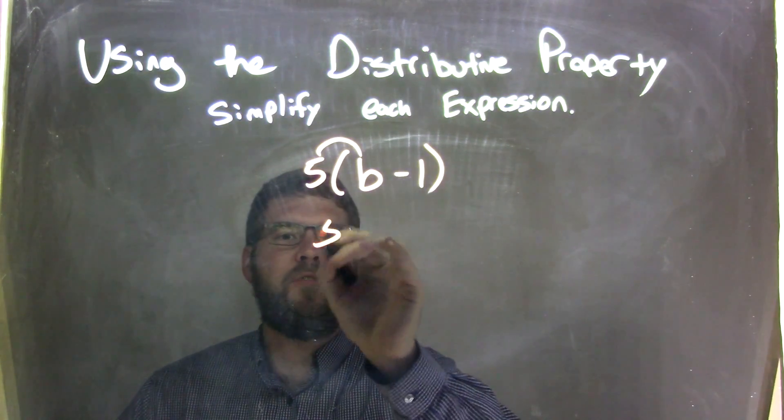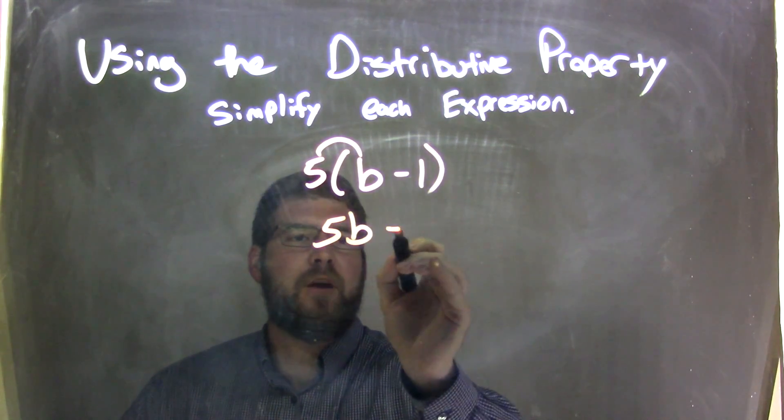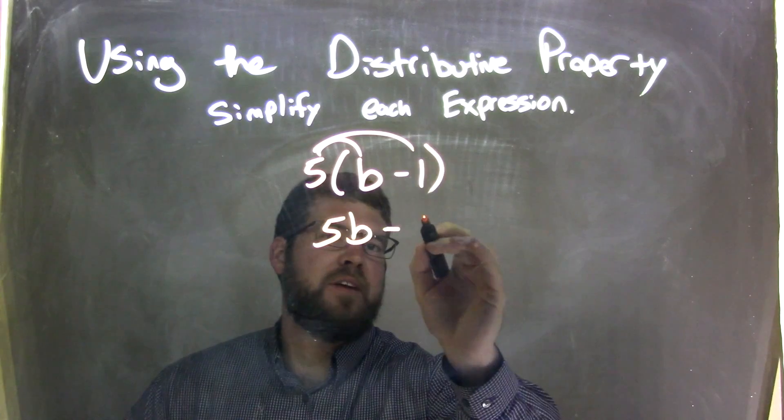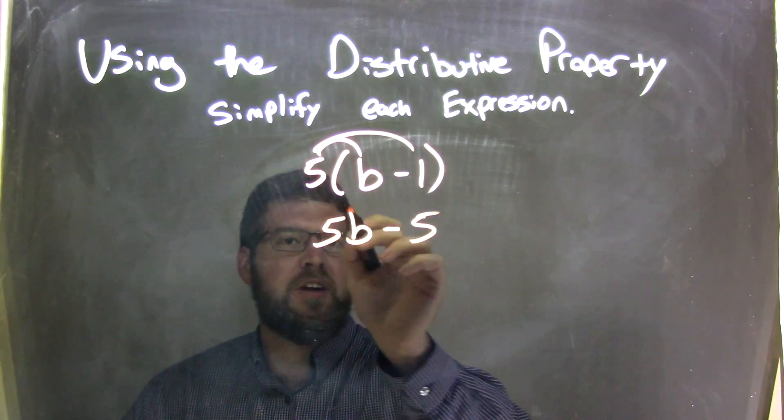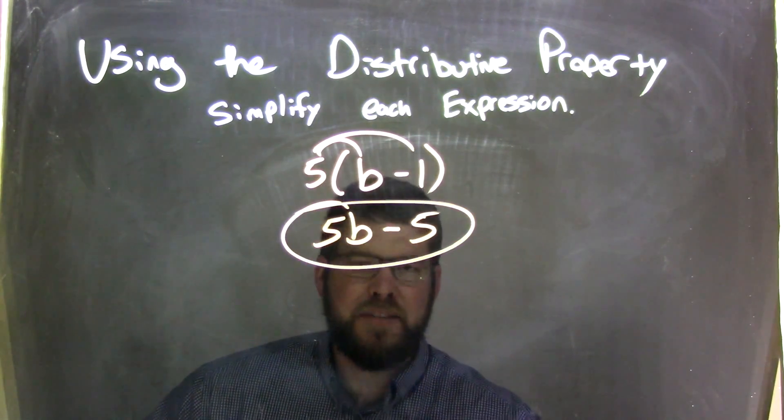5 times b is 5b. Subtraction comes down, 5 times 1 is 5, and that is actually our final answer. We cannot combine these, they're not like terms.